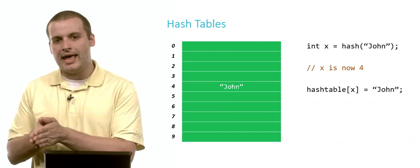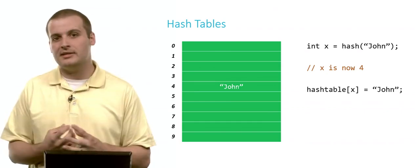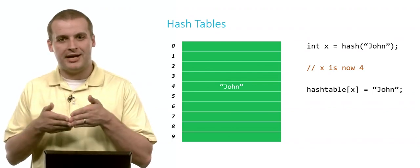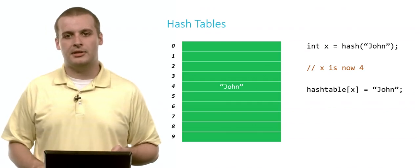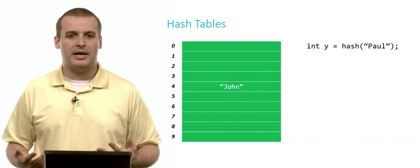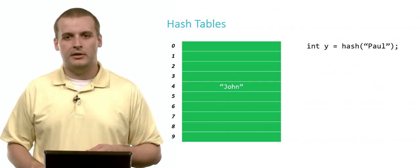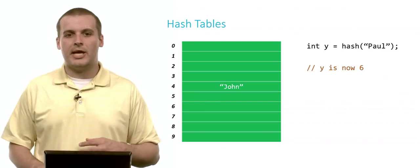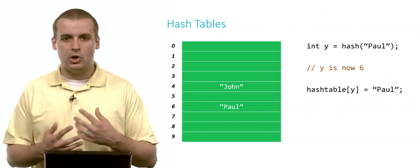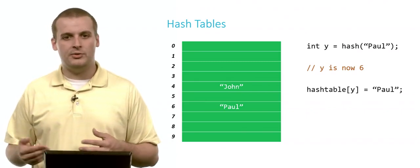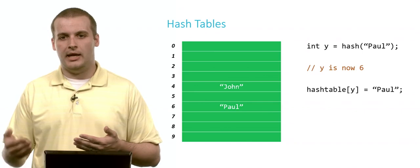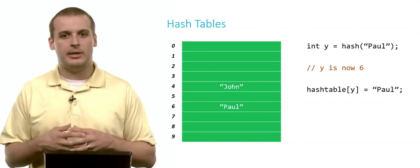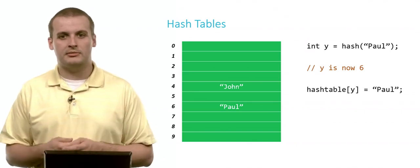Because if we hash John again, let's say later we want to search and see if John exists in this hash table, all we need to do is run it through the same hash function, get the number 4 out, and we'll be able to find John immediately in our data structure. So that's pretty good. Let's say we now do this again. We want to hash Paul. Let's say that this time we run Paul through the hash function. The hash code that is generated is 6. Well, now we can put Paul in array location 6.